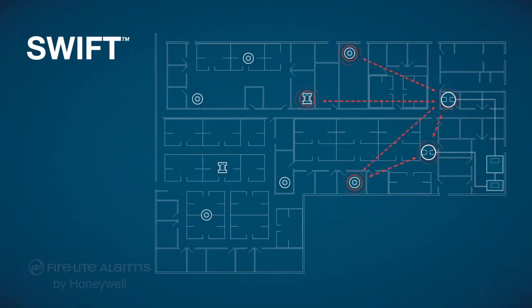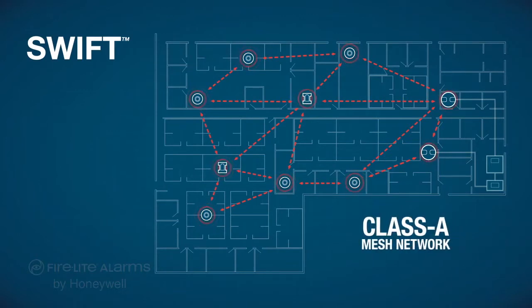Communication is established between the gateway and nearby devices. Communication is also established from device to device. The Class A mesh network within the SWIFT system creates a child-parent relationship so that each device has at least two parents providing a second redundant path for communication.